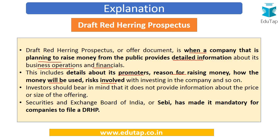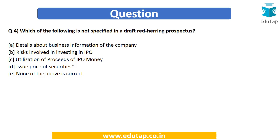Investors should bear in mind that the DRHP does not provide information about the price or size of the offering — there is no information about the price at which shares are to be issued. SEBI has made it mandatory for companies to file a Draft Red Herring Prospectus, or DRHP. The answer to this question is therefore option D: issue price of securities, as this is not contained in the DRHP.